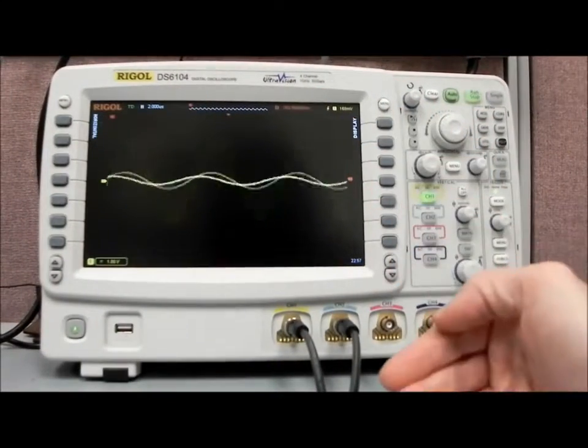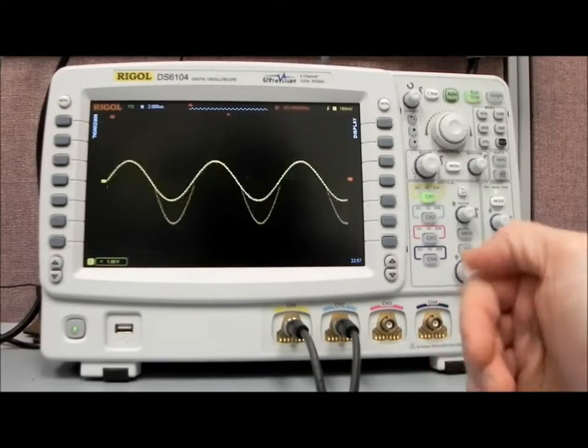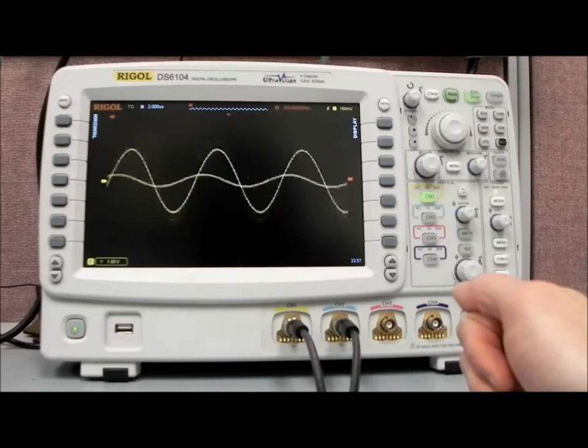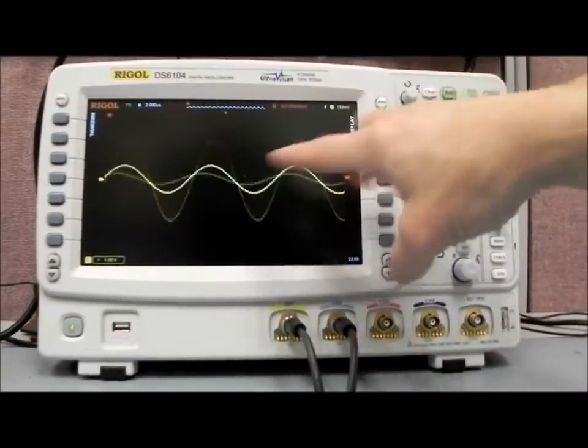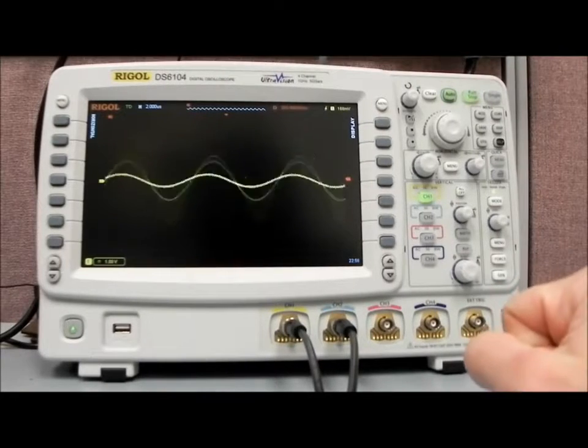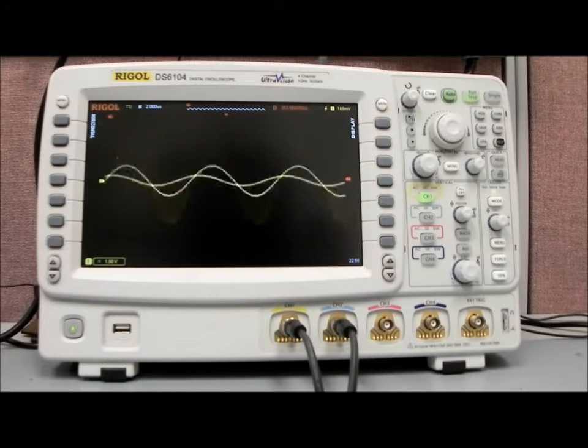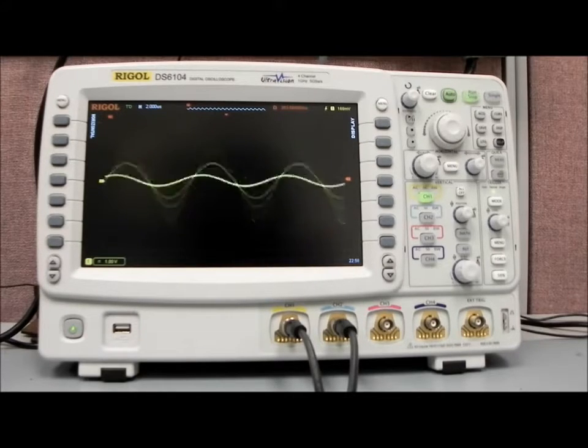But what you can do with this is build up almost like a peak hold. If you had a signal that was repetitious and supposed to be the same shape all the time, if you wanted to look for a glitch, you could set the persistence and then look to see if there were any lines outside of that standard waveform pattern. So again, if you're looking for glitches or any kind of problems that are intermittent in nature, just changing the display persistence can be extremely helpful in that regard.